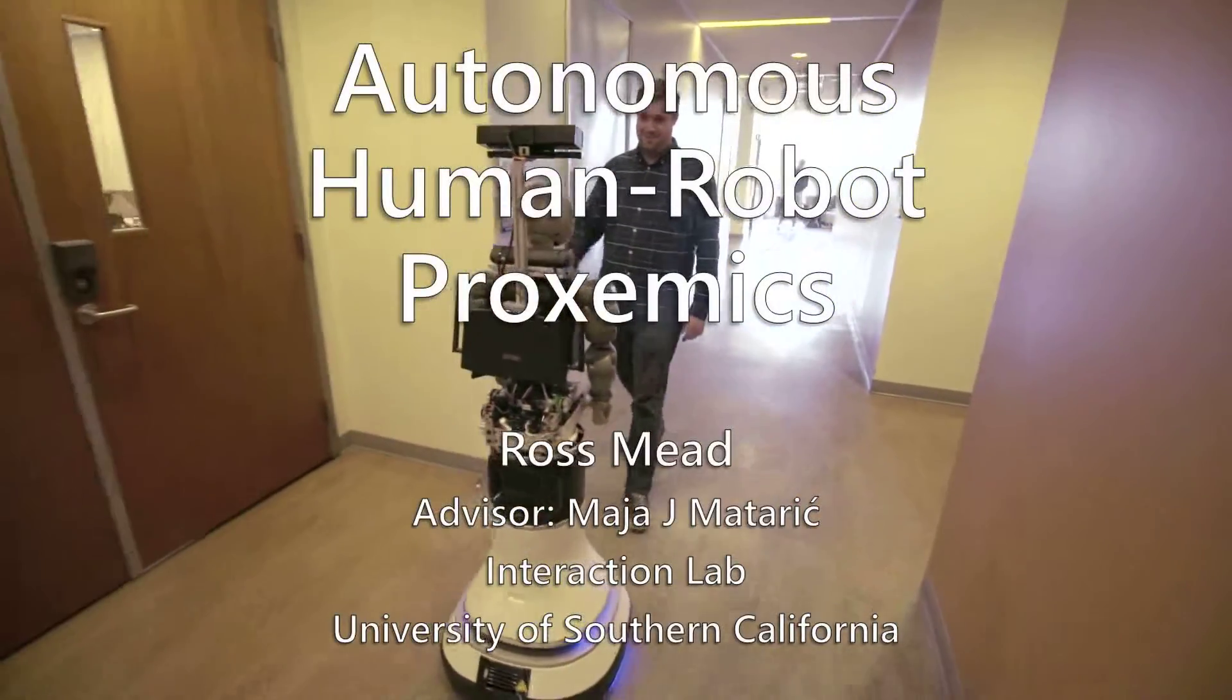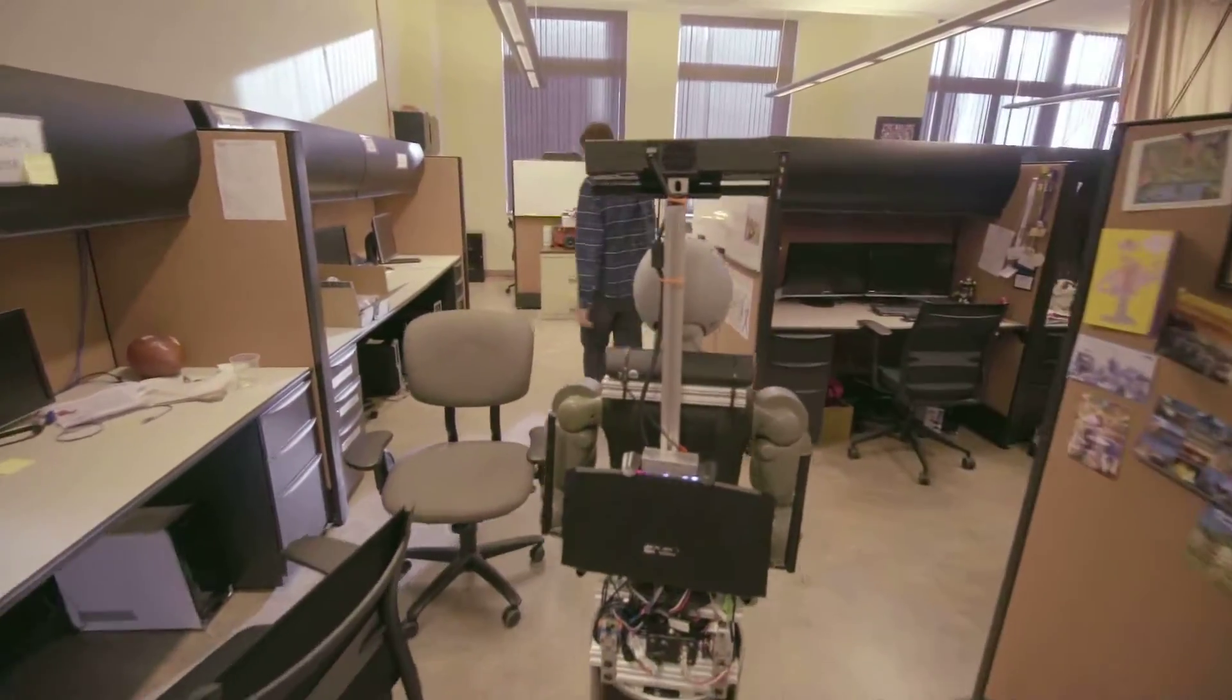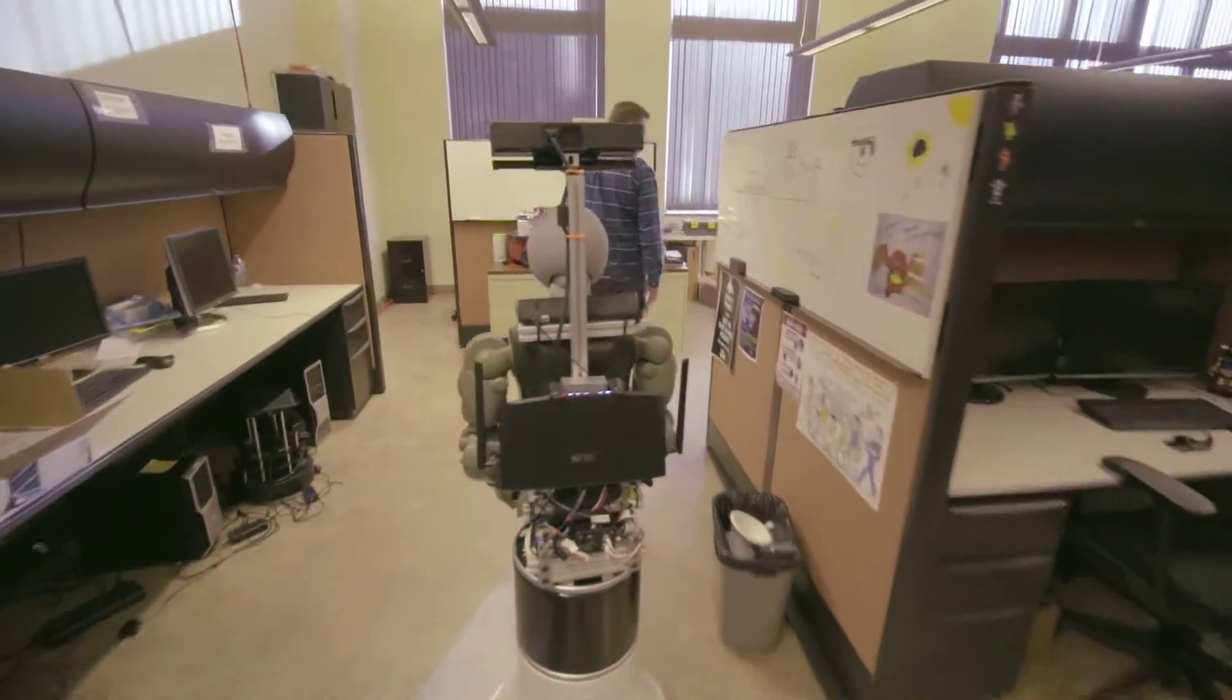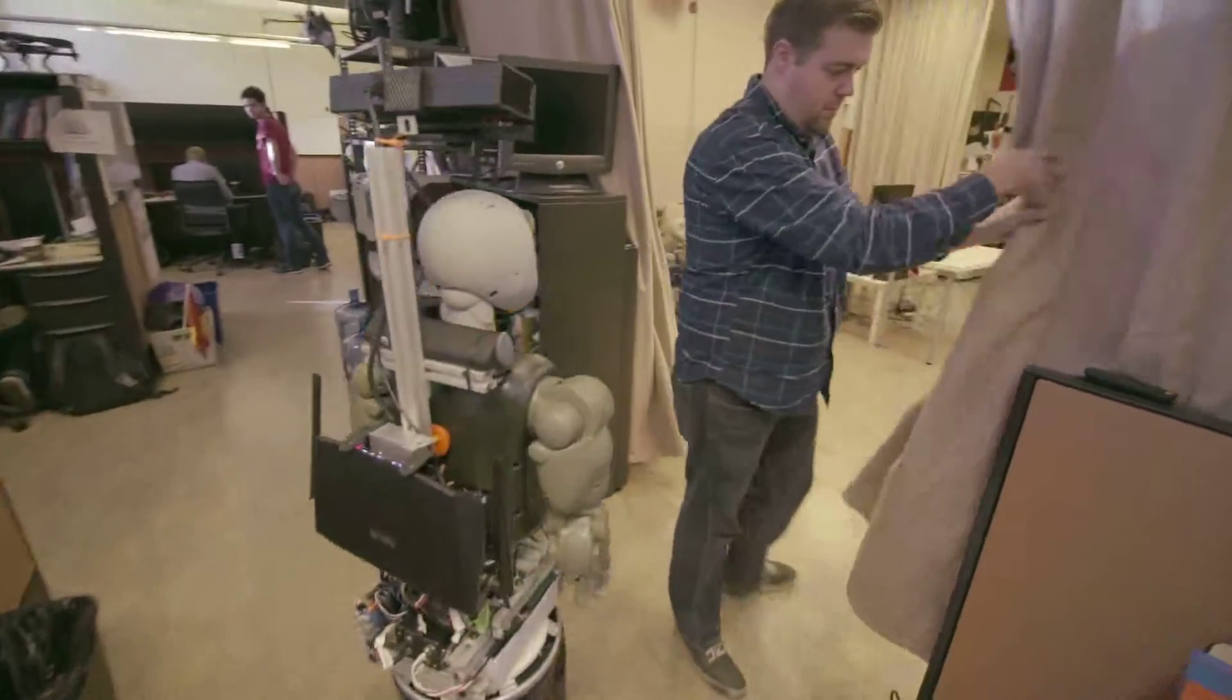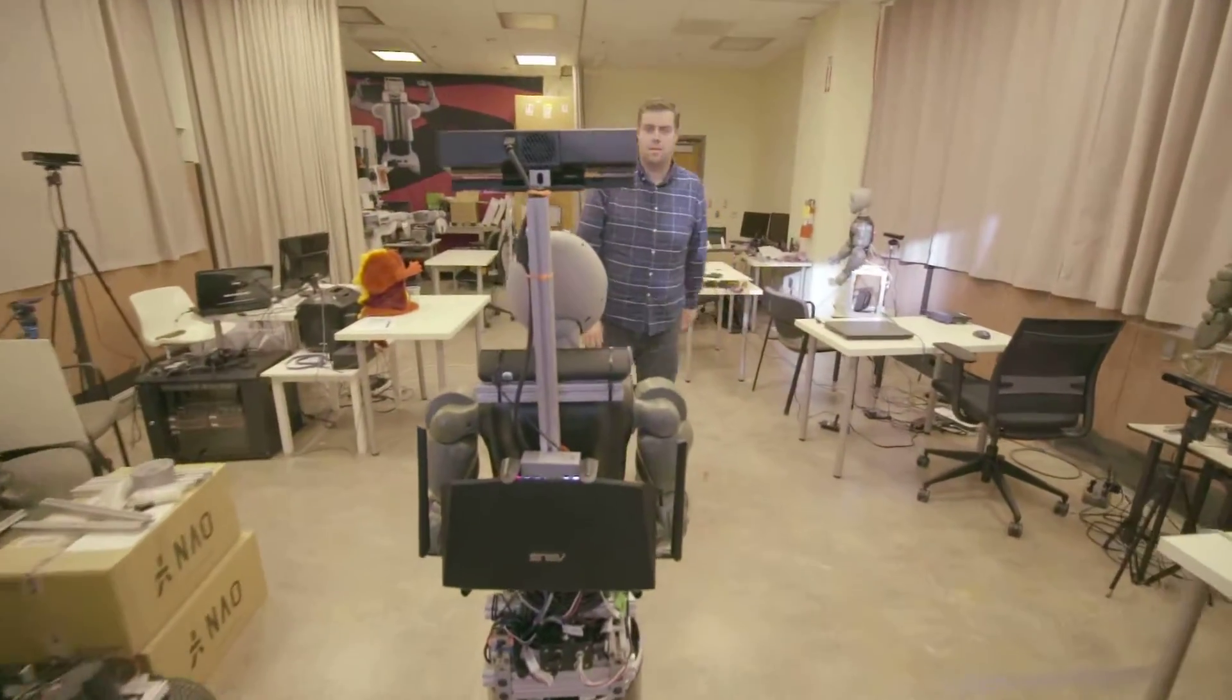At the University of Southern California, we are considering how an autonomous social robot should understand and use proxemics in human-robot interactions. Proxemics is the study of distance and orientation in face-to-face social encounters.